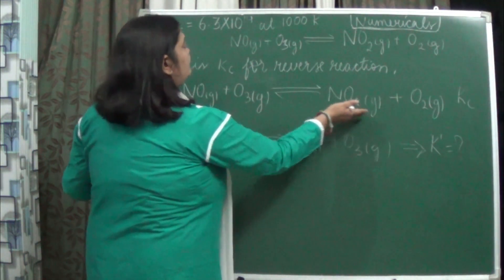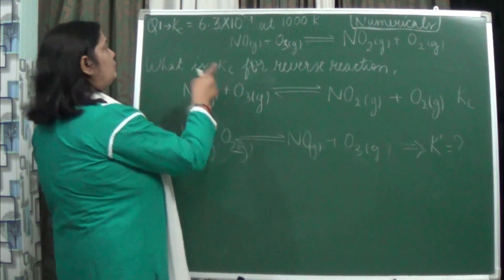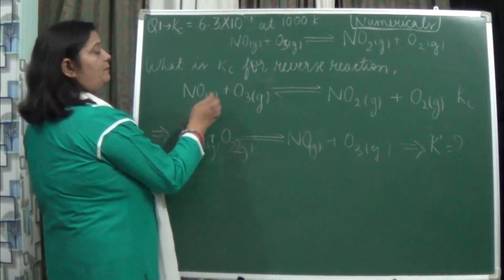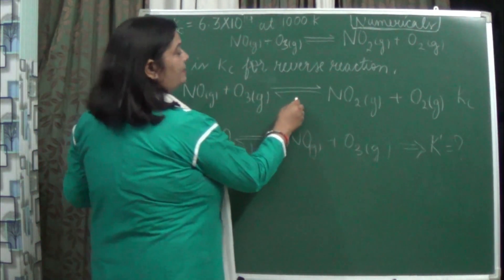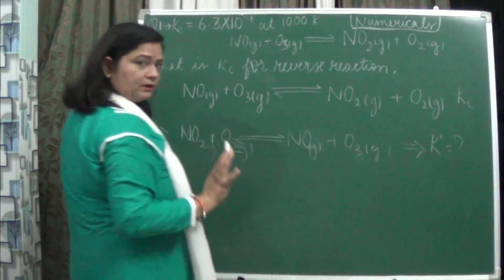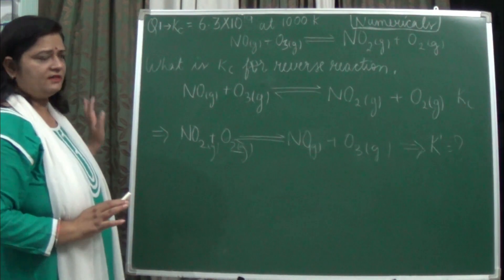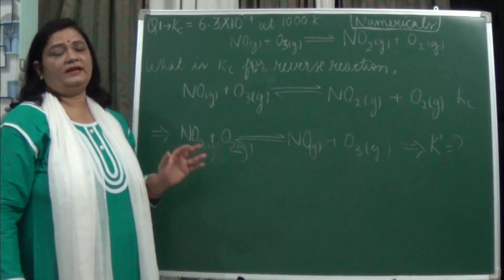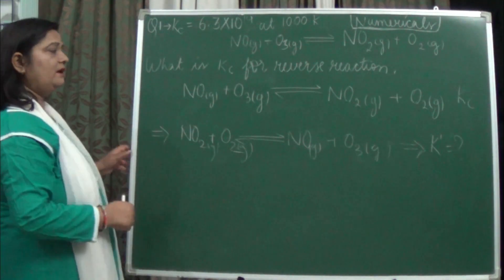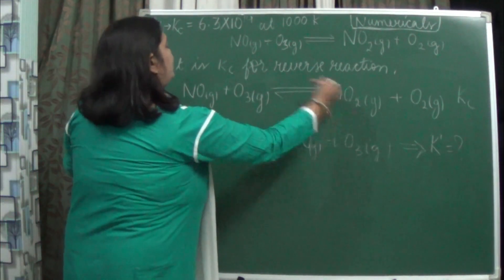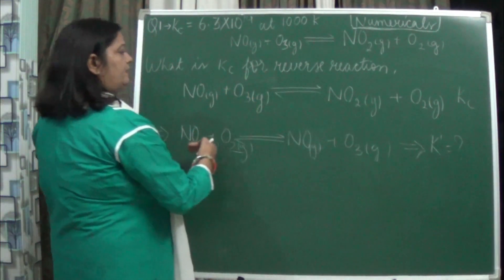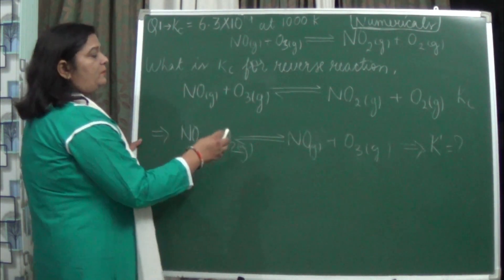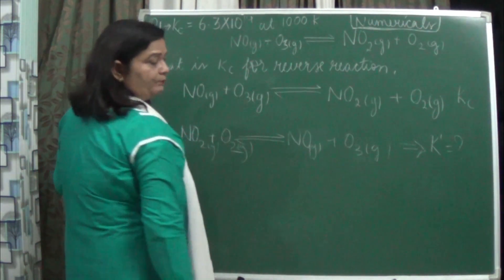So the Kc of this forward reaction is given to you. The reaction is written as NO plus O₃ in equilibrium with NO₂ plus O₂, which is given in the question itself. Now it is saying what is the Kc for the reverse reaction? Just reverse the reaction. It is moving in the reverse direction. So now NO₂ plus O₂ is forming NO plus O₃.